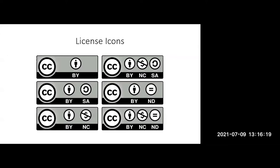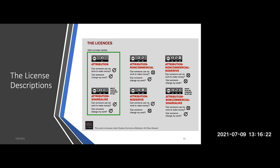The next slide is a chart dividing out these six licenses, showing the permissions for the works that you create or wish to use. We're going to review these licenses carefully so you can understand: does the license permit you to do what you want to do with it? Revise it, maybe translate it into another language, add more to it, take out some parts, cut it into smaller pieces.